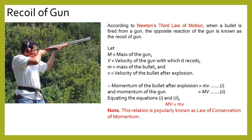According to Newton's third law of motion, when a bullet is fired from a gun, the opposite reaction of the gun is known as the recoil of the gun. Let us consider capital M as the mass of the gun and capital V as the velocity with which it recoils. Small m is the mass of the bullet and small v is the velocity of the bullet after explosion. Capital M and V relate to the gun — mass and velocity respectively — and small m and v relate to the bullet.